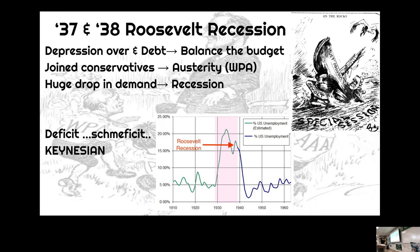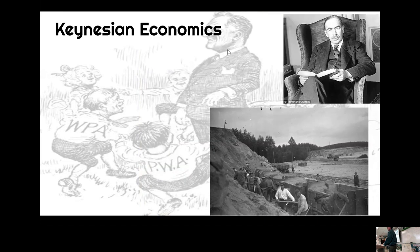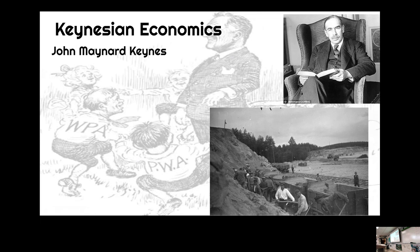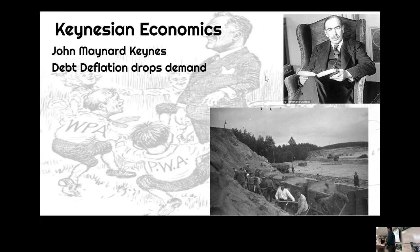Keynesian economics, named after John Maynard Keynes — an English economist best known for warning about reparations after World War I. There's Keynes right there, reading a book. Great mustache. What he said was this: he warned about debt deflation. If everybody tries to pay back their debt at the same time, that drops demand and makes things worse. Nobody is spending money. But who can spend money? The government.